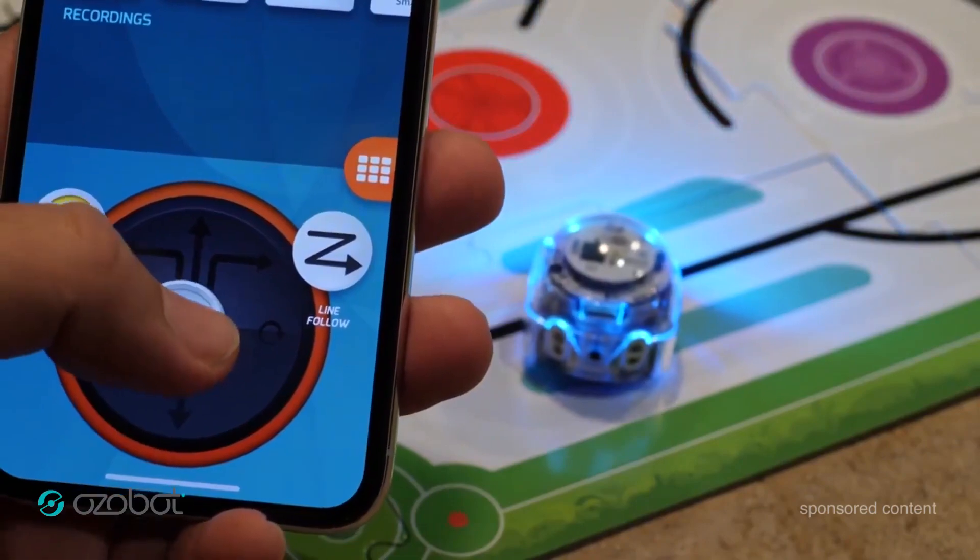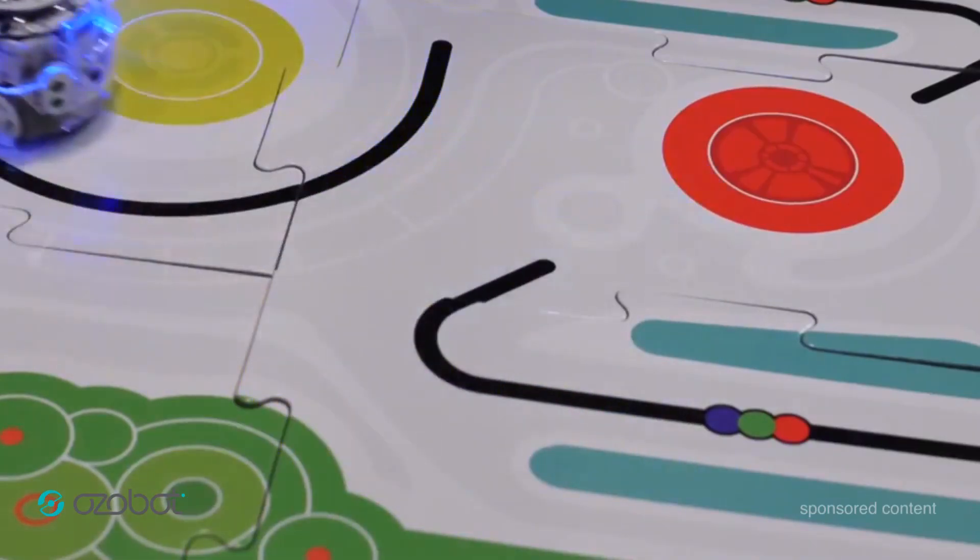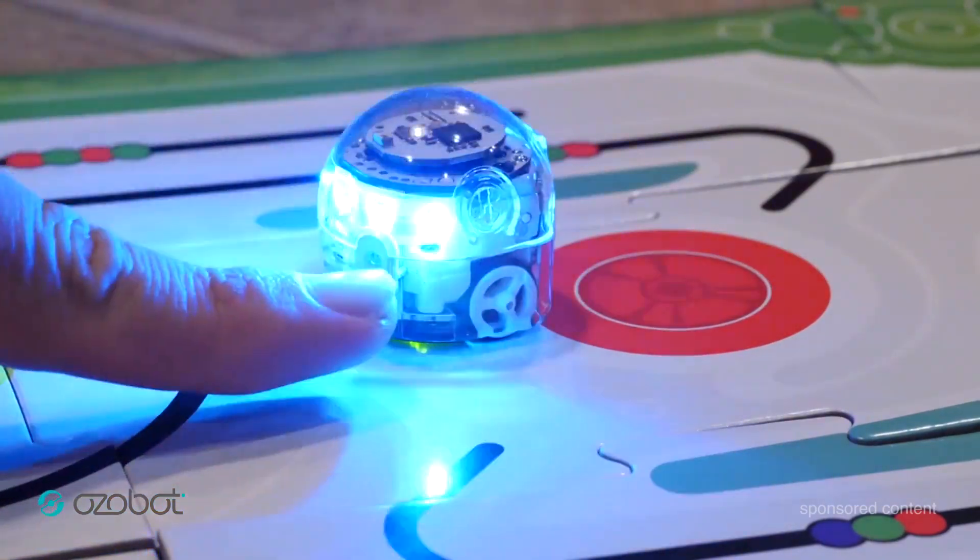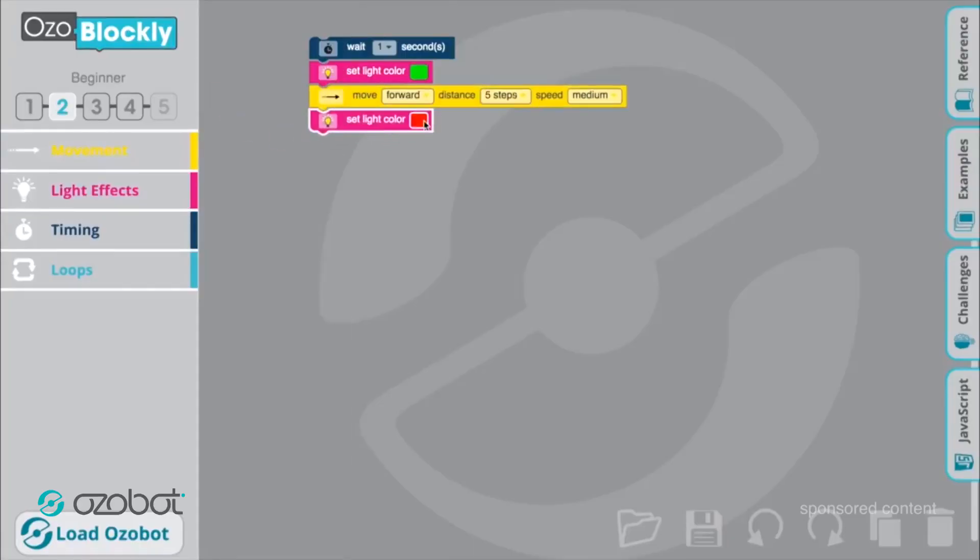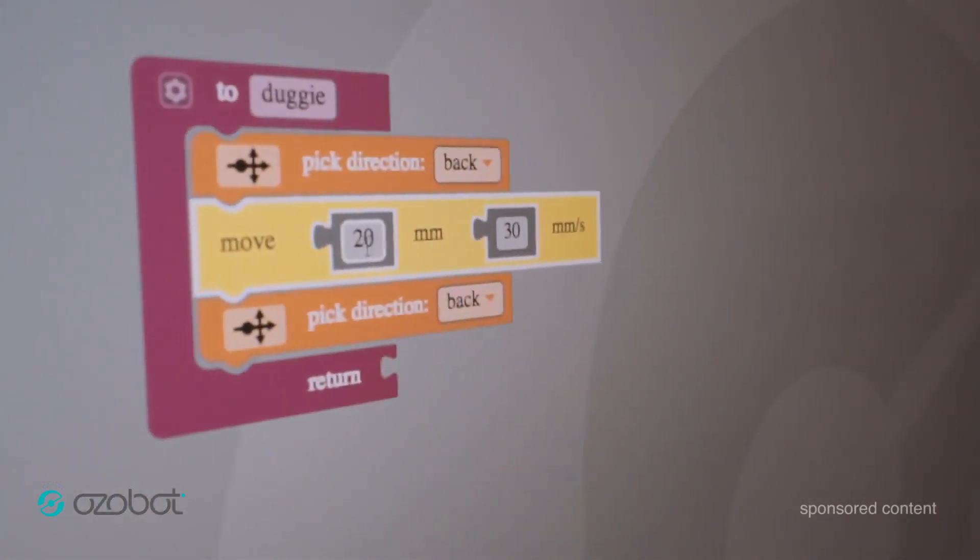The Ozobot Evo connects to your smartphone over Bluetooth. You've got the follow mode where it'll follow your finger around. There's a music mode that allows you to tap on the sensors to play different music notes. There's also the Ozoblocky service, which allows you to go in and customize exactly what you want your Evo to do with actual block coding language.